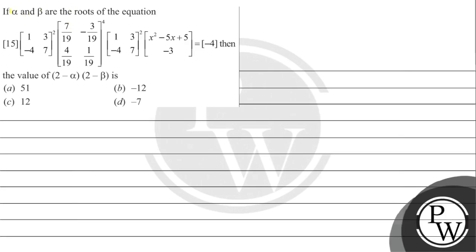Hello, let's solve yesterday's question. The question says: find beta — the roots of the equation involving matrices. We have matrix [1 5] into matrix [1 3; -4 7] squared, into matrix [7/19; -3/19; 4/19; 1/19] to the power 4, into matrix [1 3; -4 7] squared, into column matrix [4; -3] equals matrix [-4]. Find the value of (2-alpha)(2-beta). Options: 51, -12, or -7.